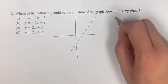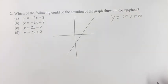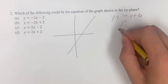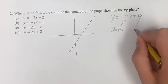So if we have the equation of a line, y equals mx plus b, we have two things that we're looking at. We have m, which is the slope, and b, which is the y-intercept.